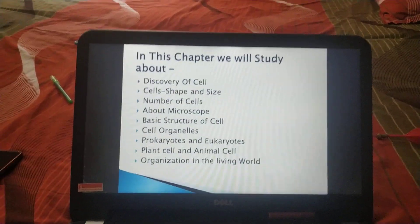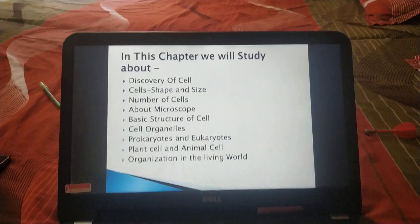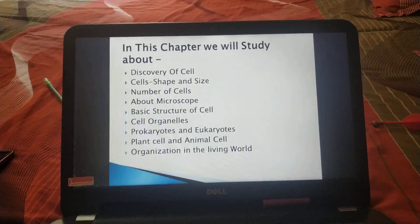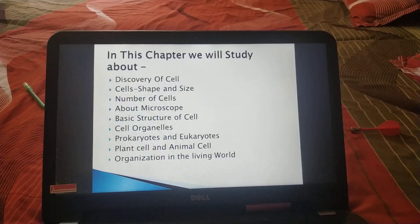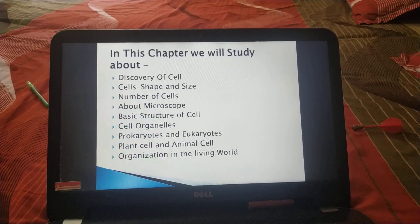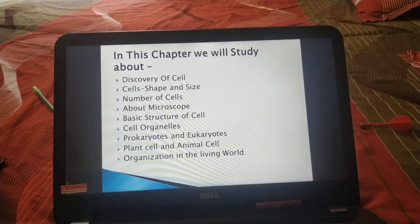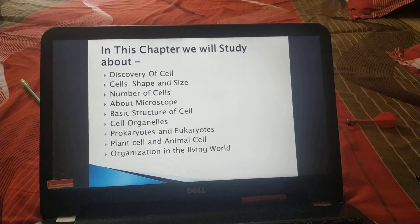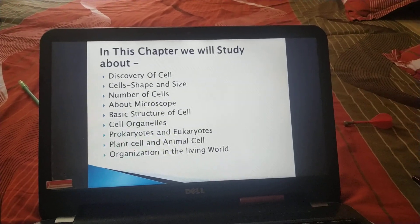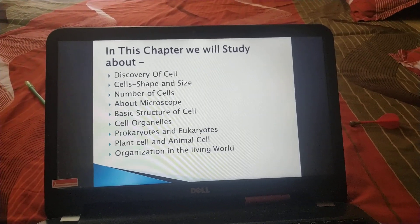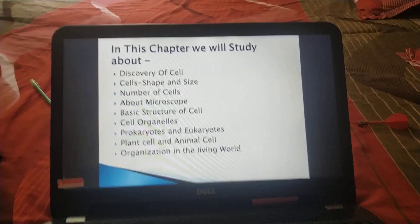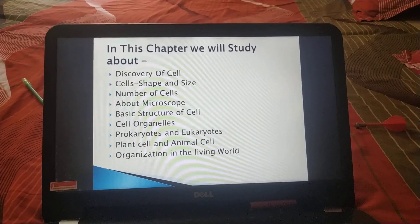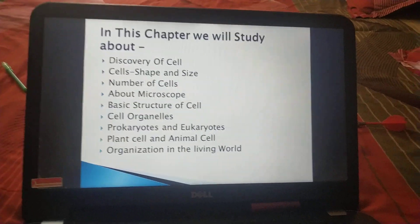In this chapter, we will study about the discovery of cell, cells' shape and size, number of cells, the microscope, basic structure of cell, cell organelles, prokaryotes and eukaryotes, plant cell and animal cell, and organization in the living world.